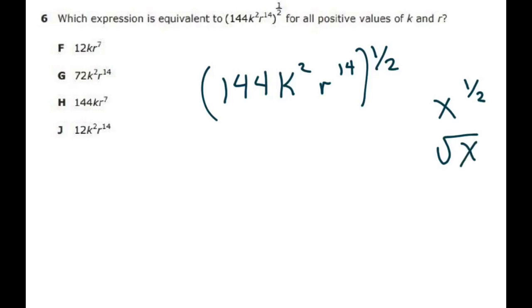So when we take each of these pieces, we've got 1, 2, 3, and I'm going to go 144^(1/2), k²^(1/2), r¹⁴^(1/2).